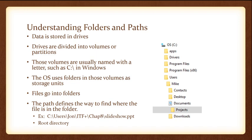When you deal with a Windows computer, your internal hard drive is typically going to be named drive C — your C drive — and that's where things are going to be stored. Drives are divided into volumes or partitions, and these volumes are usually named with a letter. The main letter for a Windows computer is the C drive. The OS uses folders in each of these volumes as storage units, and files go into those folders. If you look at this folder tree, the main drive is the C drive, and there are five main folders within it: apps, drivers, program files, program files x86, and users.